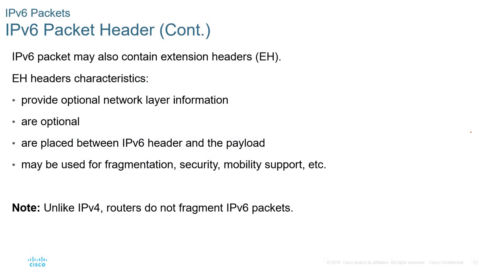IPv6 packets can also have an extension header, or EH. The EH provides optional network layer information — it's optional and is placed between the header and the payload. It may also be used for fragmentation and security. Unlike IPv4, routers do not typically fragment IPv6 packets; they use much larger packets.